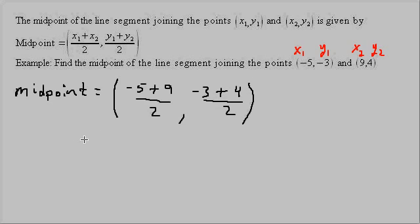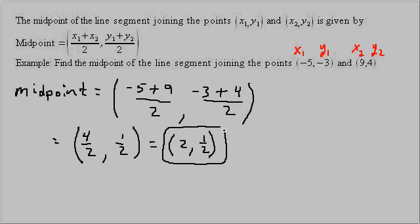And so we get negative 5 plus 9 is 4, over 2. And negative 3 plus 4 is 1, over 2. Then we simplify the 4 over 2, so this would be (2, 1/2). There's our coordinates for the midpoint. And that's it.